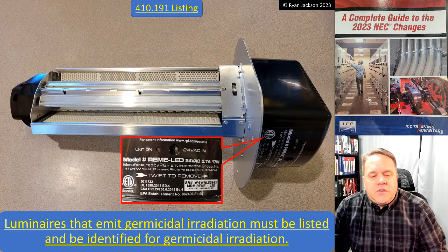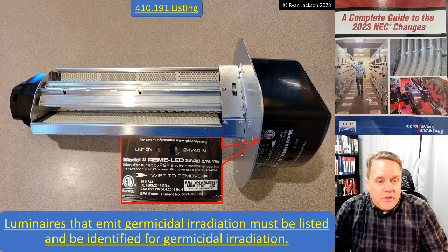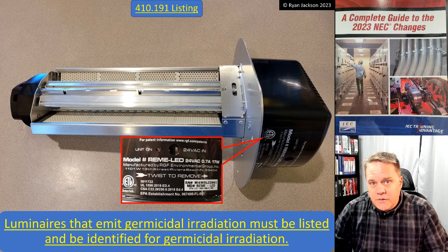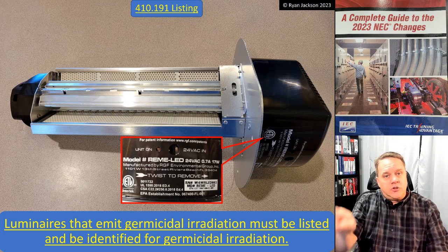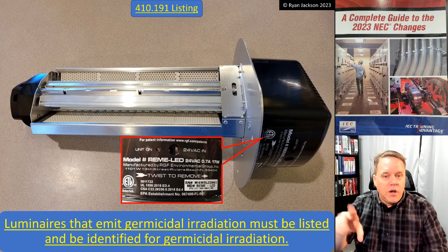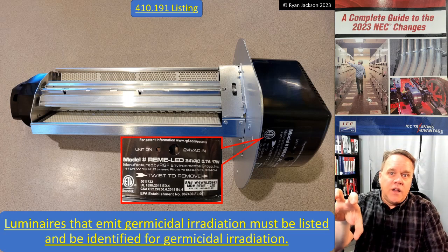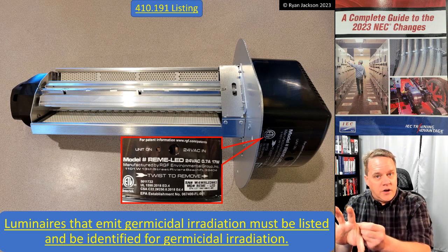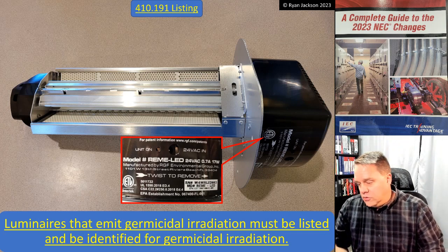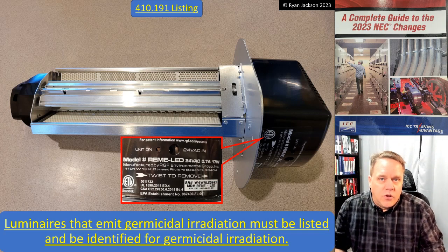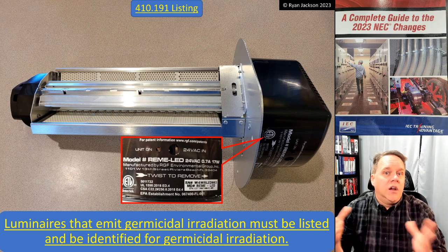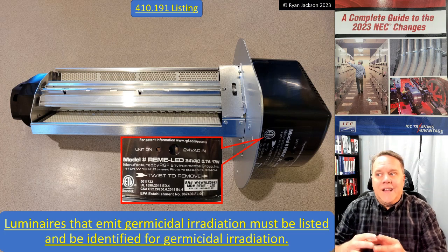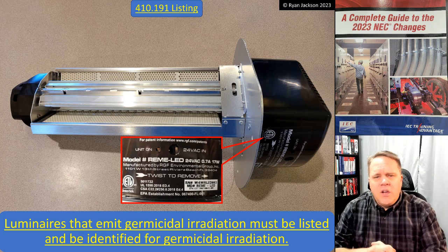Section 410.197 covers germicidal irradiation systems. I actually have one installed in my house — it goes right into the furnace plenum. The installation involves cutting a three-inch hole into the ductwork with a hole saw, inserting the luminaire into the duct, wiring it externally, and leaving it on. It uses ultraviolet lighting inside your air distribution system to kill germs.